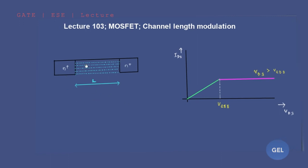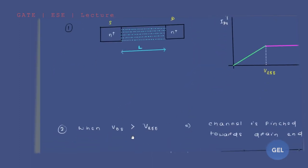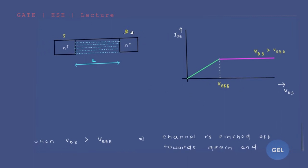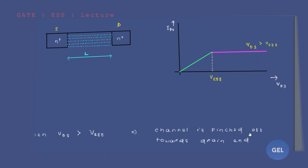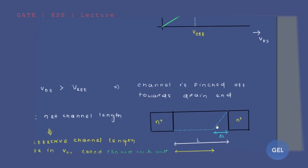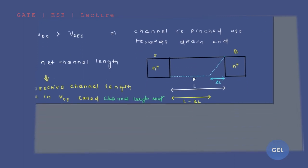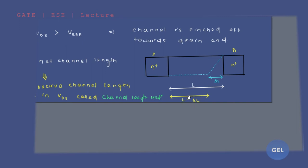I have taken an N-channel MOSFET — this is your source, this is your drain, and this is your channel which is already formed, with length L. When VDS is greater than V_effective, the channel is pinched off towards the drain. The pinched-off portion is taken as ΔL, the total length is L, and the remaining active channel length is L minus ΔL.